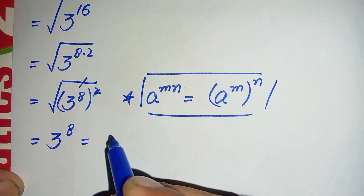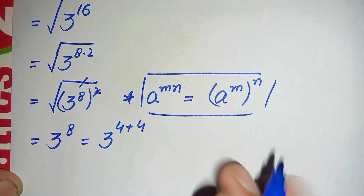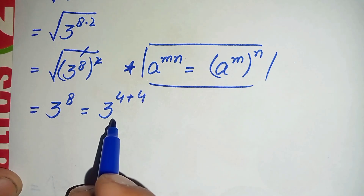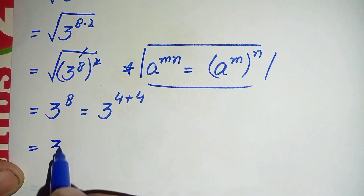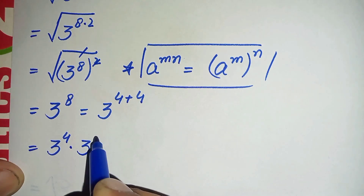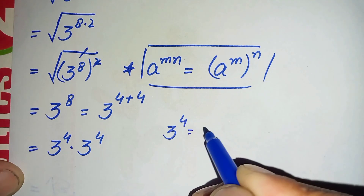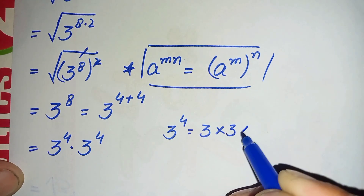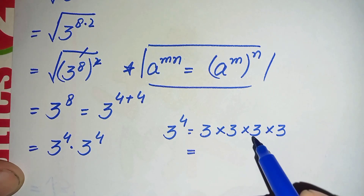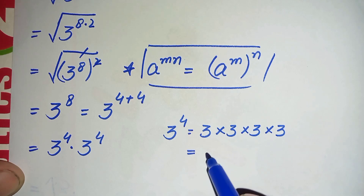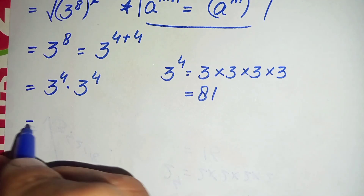We can write 3 raised to power 8 as 3 raised to power 4 plus 4. Using the exponential property, we spread the powers over 3, so this becomes 3 raised to power 4 times 3 raised to power 4. Now, 3 raised to power 4 means multiplying 3 four times: 3 times 3 is 9, 9 times 3 is 27, and 27 times 3 is 81. So 3 raised to power 4 is 81.